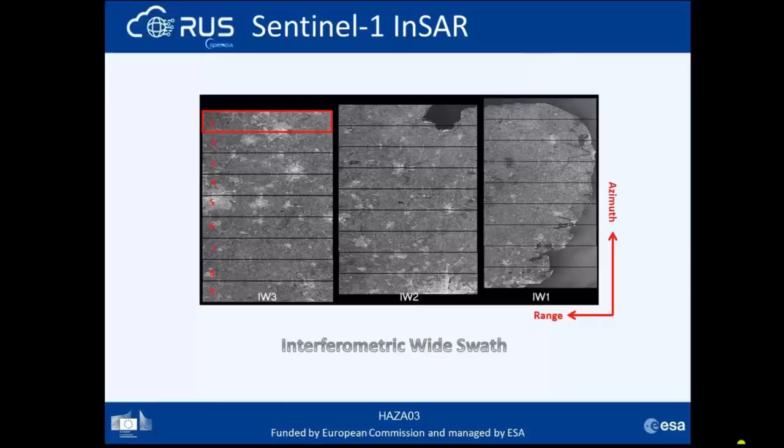Each sub-swath image consists of a series of bursts, where each burst has been processed as a separate SLC image. In sub-swath 3 we have nine bursts that are included in azimuth time order with a black field demarcation in between.